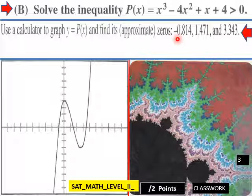So they come out to be, using your calculator, negative 0.814 is over here, then 1.471 is there, and then 3.343, which is here.